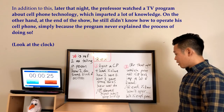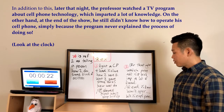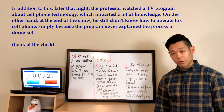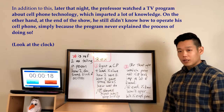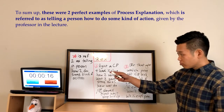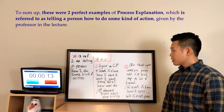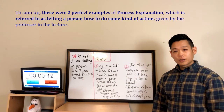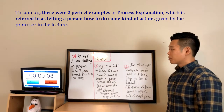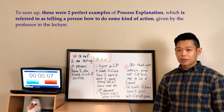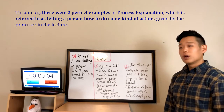On the other hand, at the end of the television show the professor still did not know how to operate his cell phone simply because the program never explained the process of doing so. To sum up, these were two perfect examples of process explanation, which is referred to as telling a person how to do some kind of action, given by the professor in the lecture.